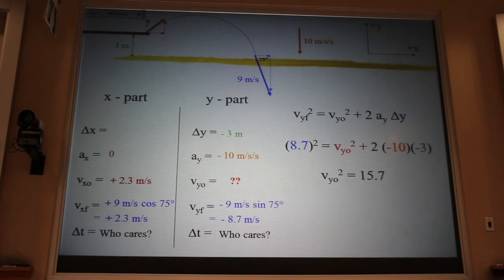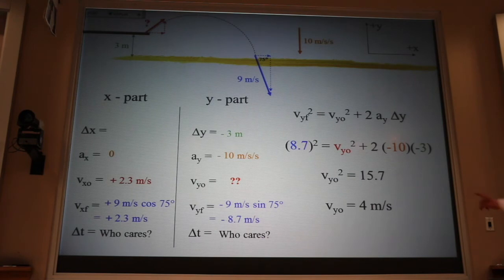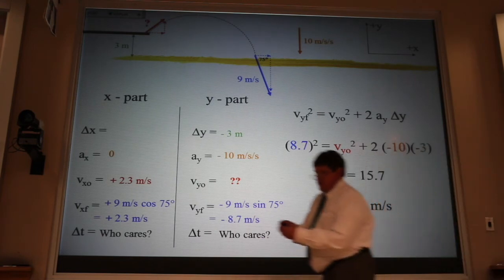Now, I get v initial squared is equal to 16. That gives me the answer of v initial y is equal to plus 4 or minus 4. I choose the plus 4 because she's going up.